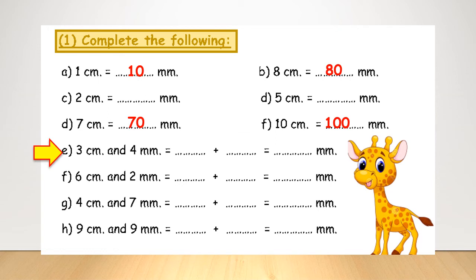Let's go to letter E. 3 centimeters and 4 millimeters. We need to convert the 3 centimeters to millimeters. 3 centimeters means it will be 30. And the 4 millimeters will be 4 millimeters too. It will be 4 and 30. It will be 34. Letter G, 4 centimeters and 7 millimeters. How many millimeters? Then we need to convert 4 centimeters to millimeters. 4 centimeters equals 40. And 7 millimeters will be 7. 40 plus 7 equals 47. Excellent job.